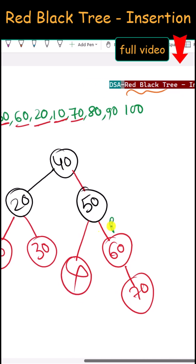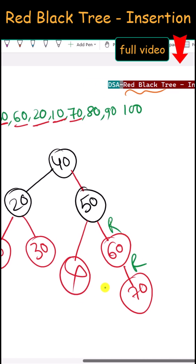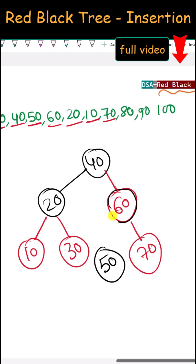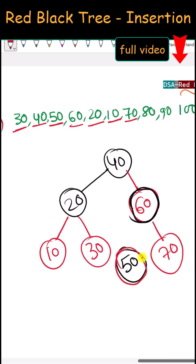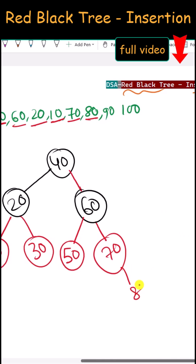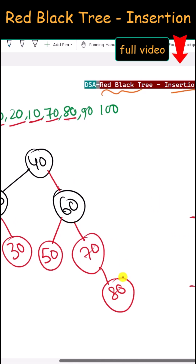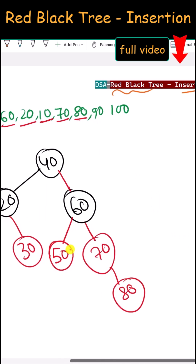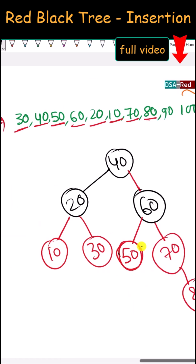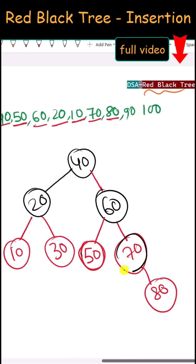Next we insert 70, placed here. There is no uncle, so this is a right-right rotation — we rotate left and convert 60 to black, and 50 becomes red.